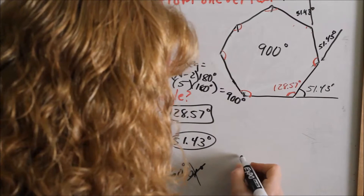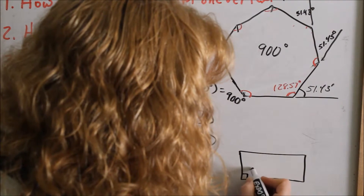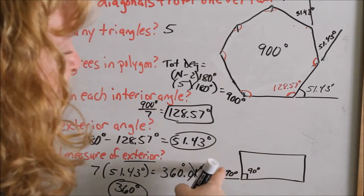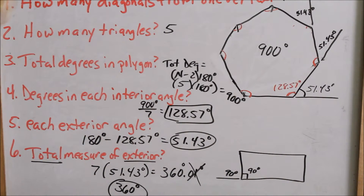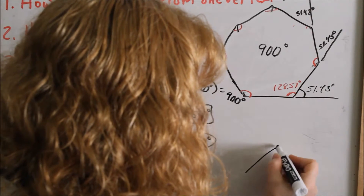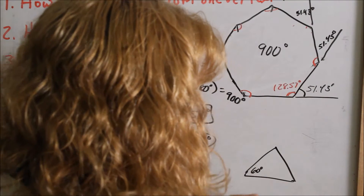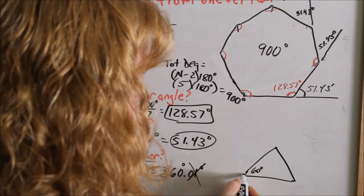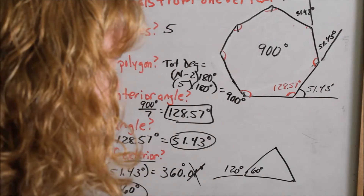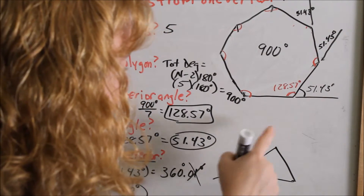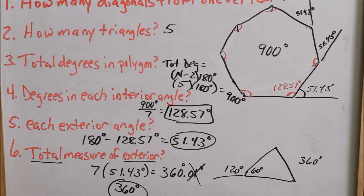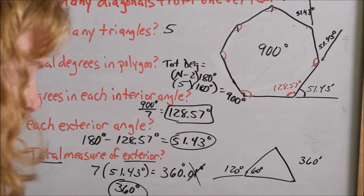Let me prove it to you. Look at a rectangle: every interior angle is 90 degrees, so each exterior angle is also 90 degrees. Four exterior angles times 90 is 360. Now look at an equilateral triangle: all interior angles are 60 degrees. The exterior must be supplementary, so each exterior is 120 degrees. 120 times 3 equals 360 degrees. The total exterior of any polygon always adds up to 360 degrees.